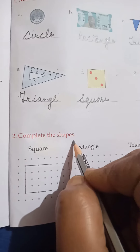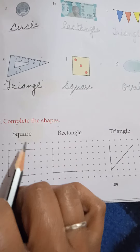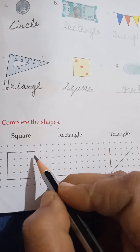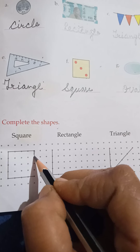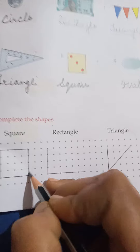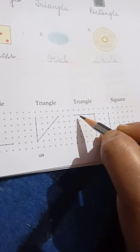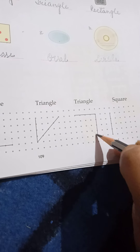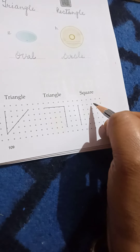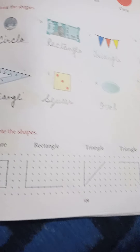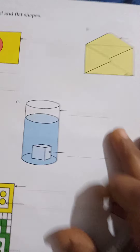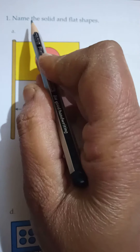Complete these shapes. Children, join these dots and make a shape — a rectangle. Join these shapes — triangle and square. Do it yourself at home. Now come to the next page — number one: name the solid and flat shapes.